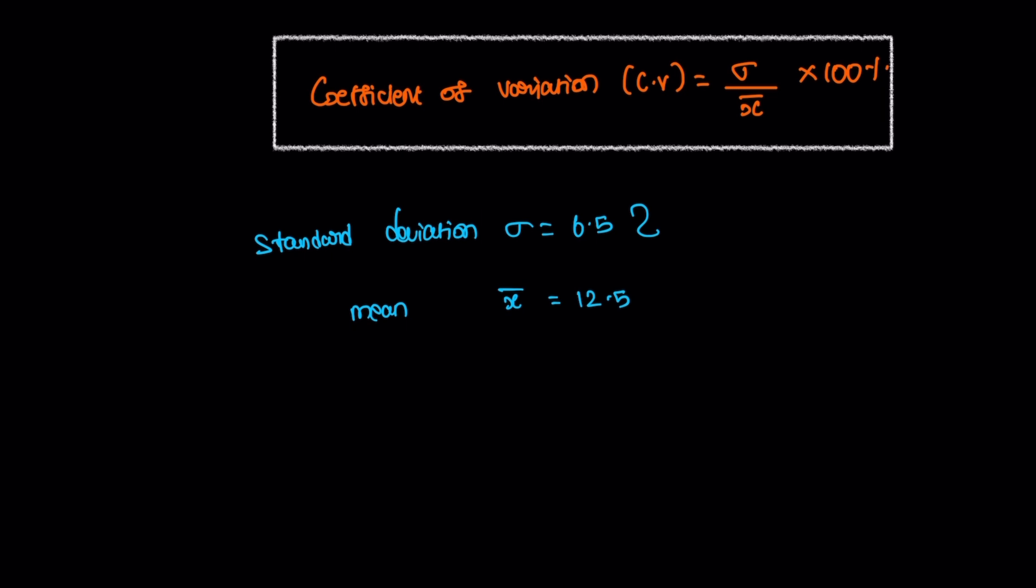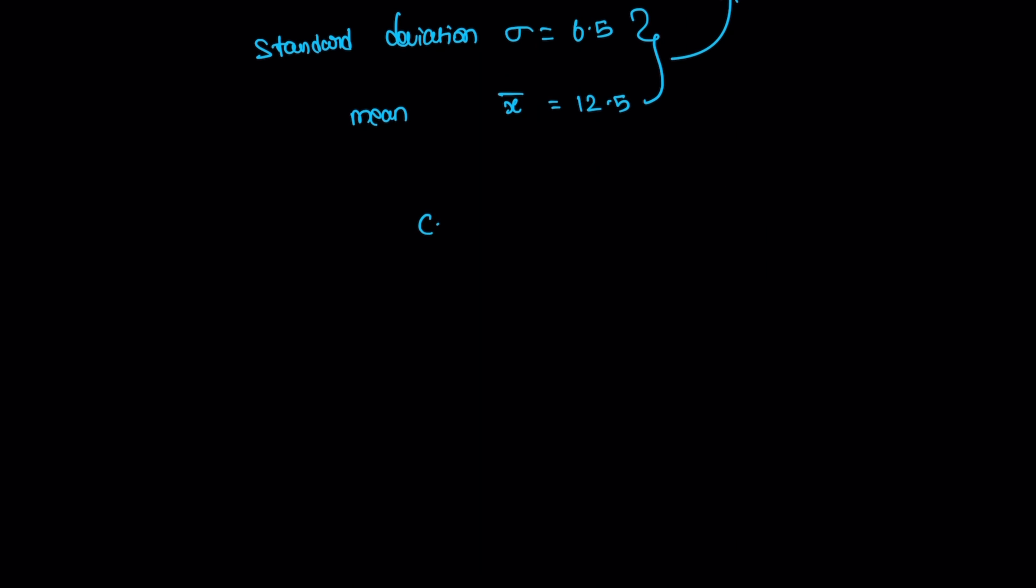Now, the two values will replace in the coefficient of variation. The coefficient of variation is 6.5 divided by 12.5, then multiplied by 100.